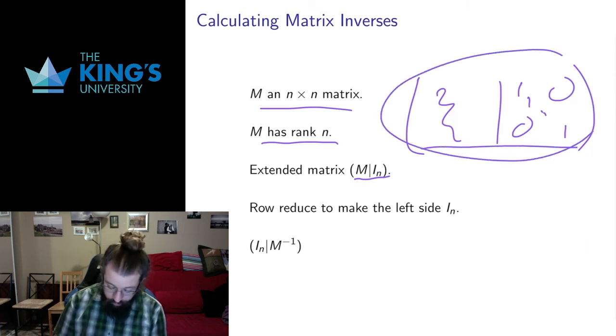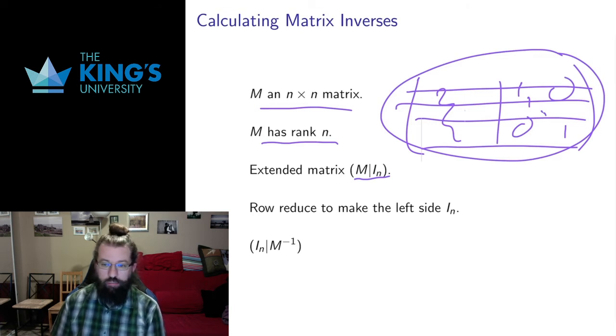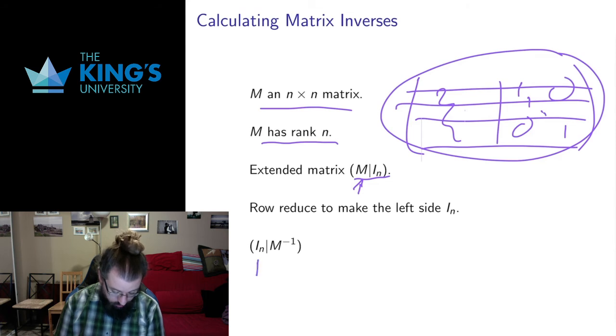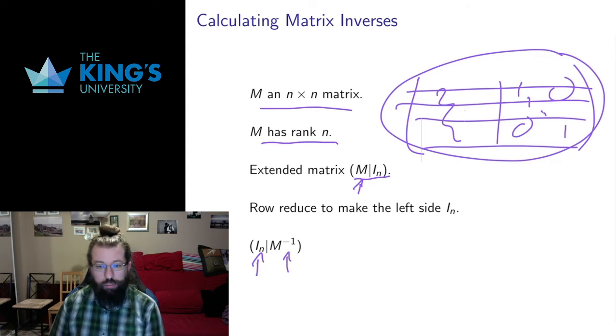I'm going to row reduce this whole thing. So with these super long rows all at once, so operations will happen to the entire row on both sides of the dividing line. And I'm going to try and make this side which started with M—I'm going to try and turn it into the identity matrix. If I can, then what ends up on the other side is going to be the matrix inverse.